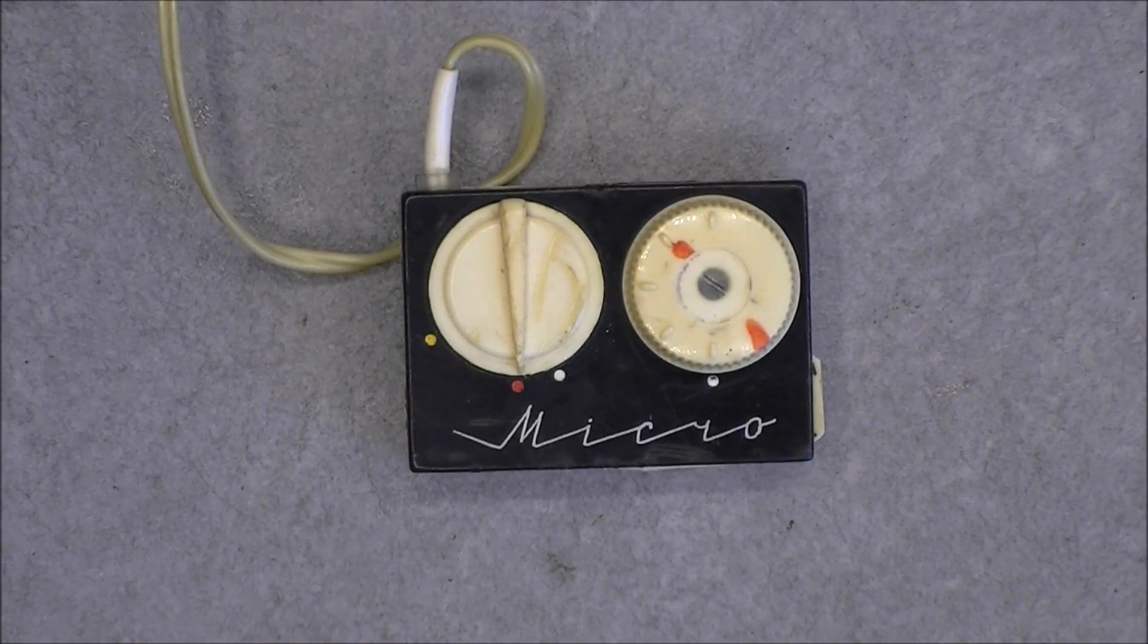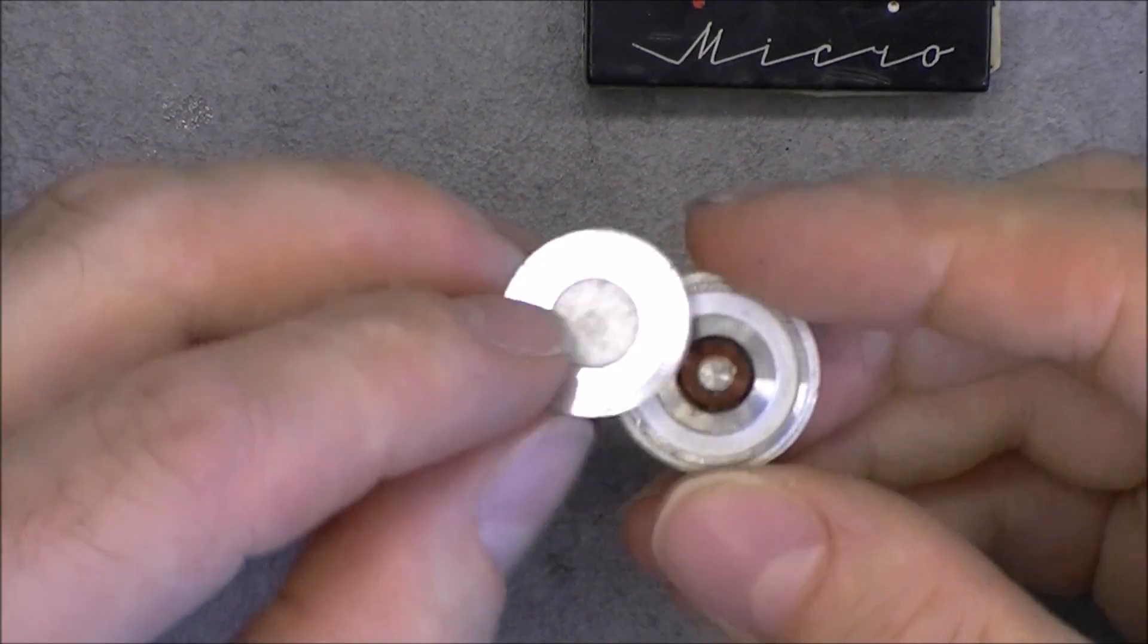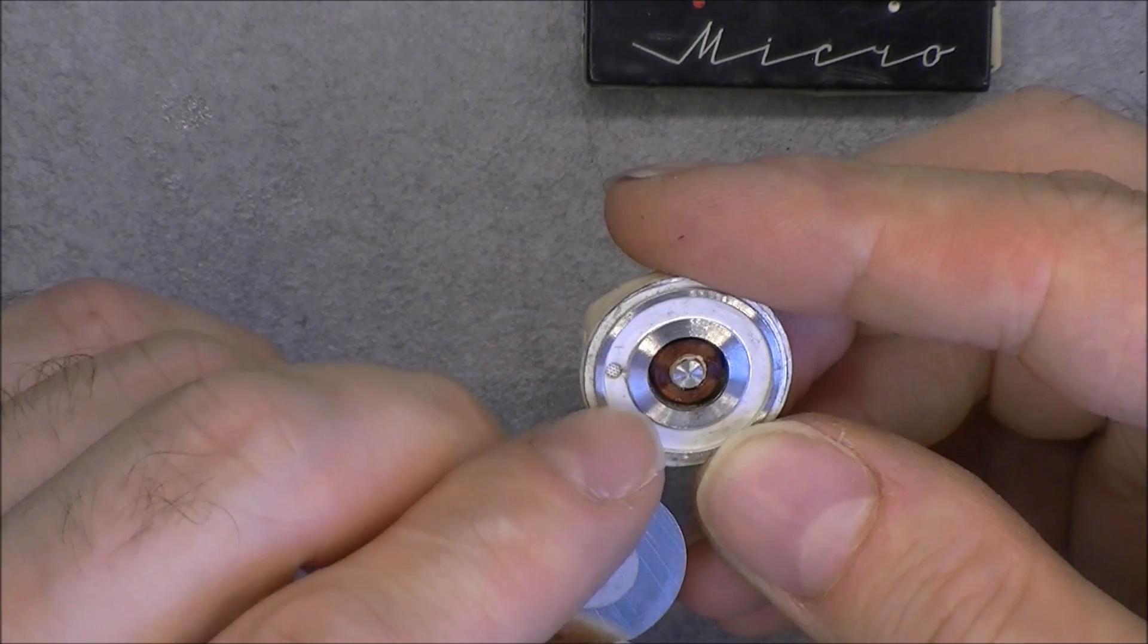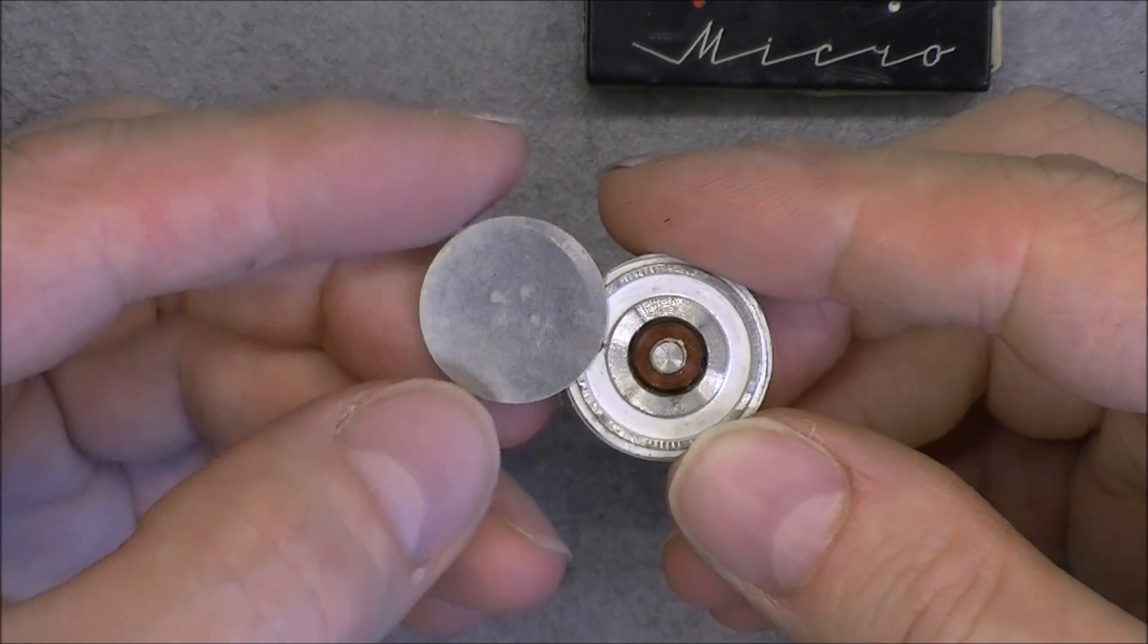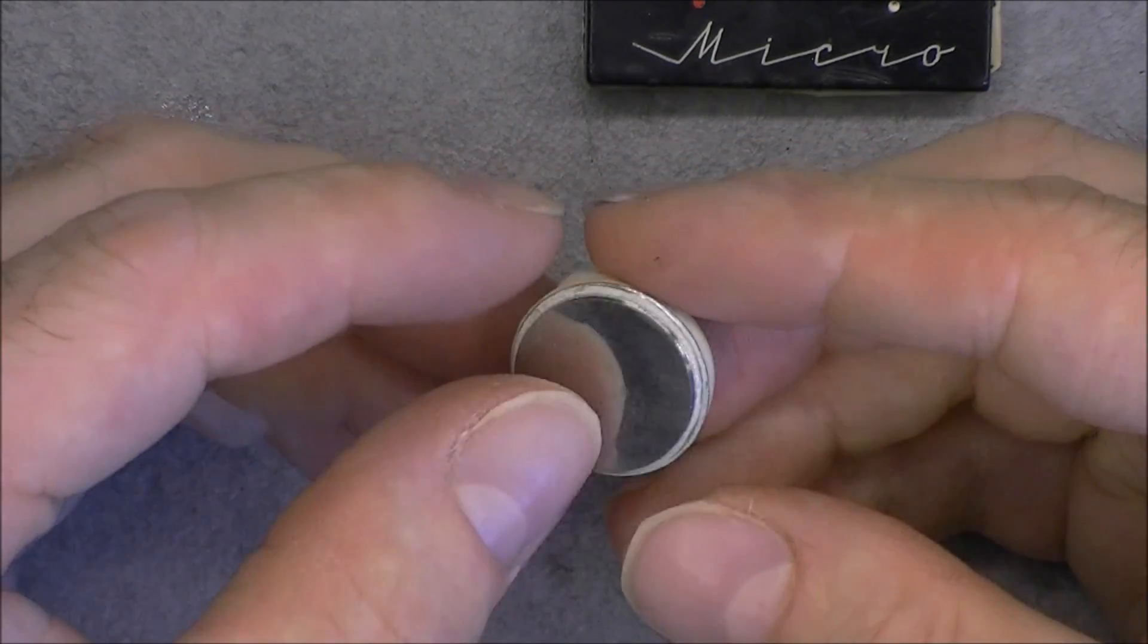First, we will have a look into the remains of the headset. It is a metal disc speaker as you can see with a magnet coil here. And this has a speaker piece. Probably it was very, very bad.